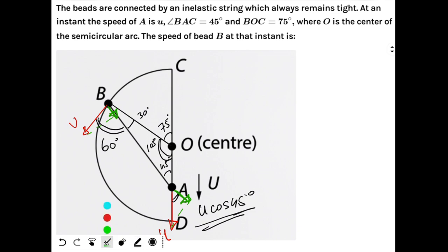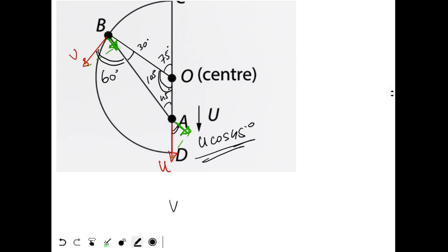So component of V along the string will be V cos 60 degrees. Therefore, V cos 60 degrees equals U cos 45 degrees. So V will equal U root 2.